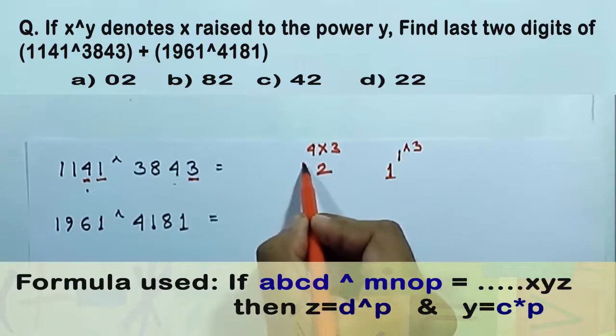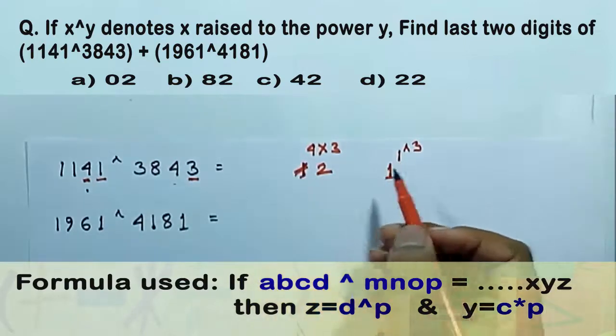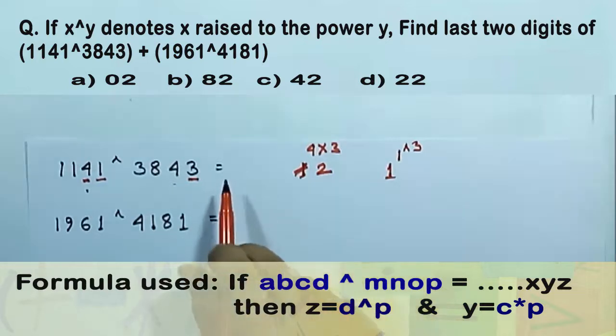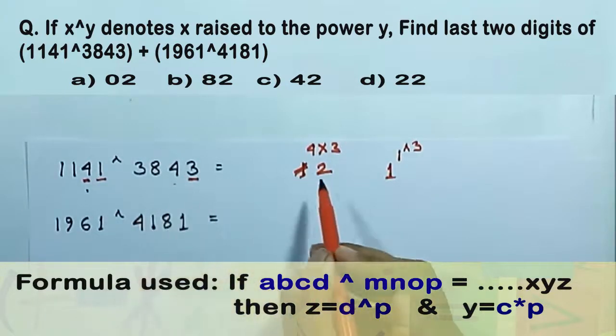So 1 is cancelled out, so here the last two digits of this number is 21. Now again, the same step can be followed for this number.